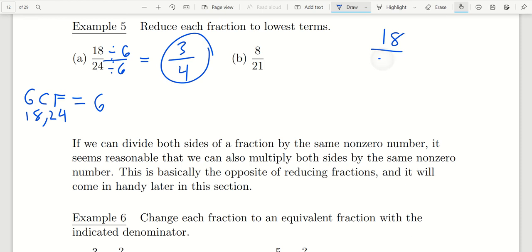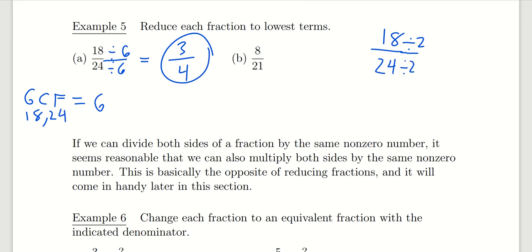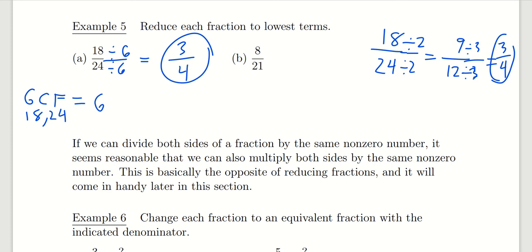If you don't recognize the GCF as 6, maybe you see that 2 can go into both numbers. You can reduce by dividing top and bottom by 2 to produce 9 over 12, which is simpler but still not in simplest form, because both 9 and 12 are divisible by 3. It's important that whatever number you divide the numerator by, you must also divide the denominator by exactly the same number. Eventually you get down to the same answer — it just took a few more steps. If you find the GCF at the beginning, it'll be just one step.